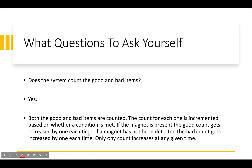Does the system detect a magnet? Yes — the hall sensor successfully detects whether a magnet is present or not. The value of the hall sensor is zero when no magnet is present and changes to one when a magnet is present. Next: does the system count good and bad items? Yes — both counts are incremented based on whether a condition is met. If the magnet is present, the good count increases by one; if no magnet is detected, the bad count increases by one. Only one count increases at any given time.